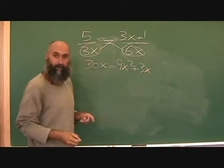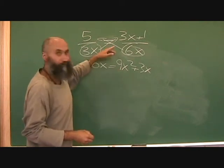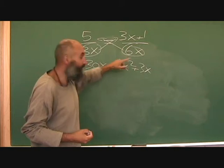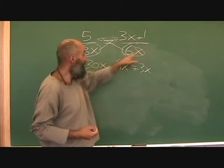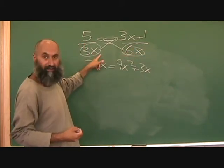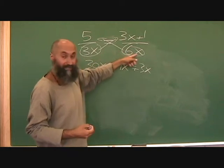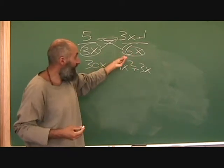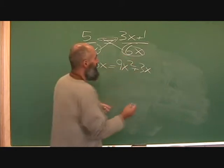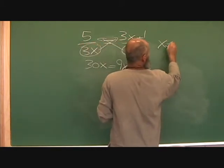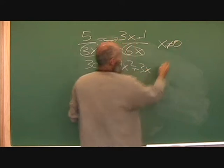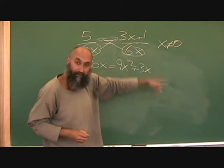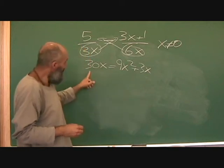...plus 3x. Now, before we continue and start moving things around, we should write down a restriction. The restriction is: 3x cannot equal zero, and 6x cannot equal zero. Both of these give us the result that x cannot equal zero. Keep that there because you have to include it in your final answer.